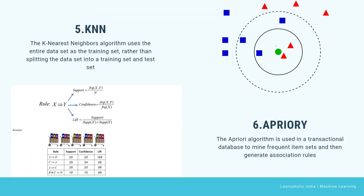The next algorithm is KNN. The KNN algorithm uses the entire dataset as the training set rather than splitting it into training and test sets. When an outcome is required for a new data instance, the KNN algorithm goes through the entire dataset to find the k-nearest instances most similar to the new record. It then outputs the mean of the outcomes, or the mode for classification problems. The value of k is user-specified. These five algorithms come under supervised learning.